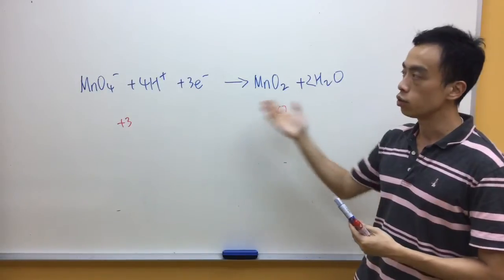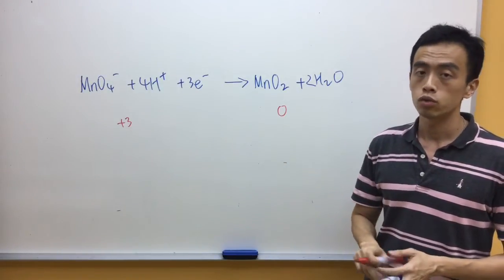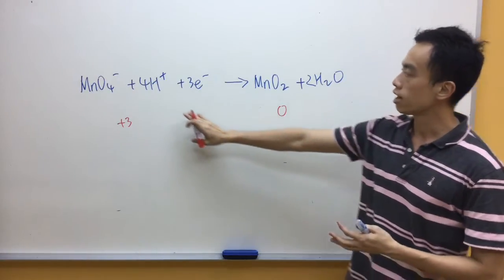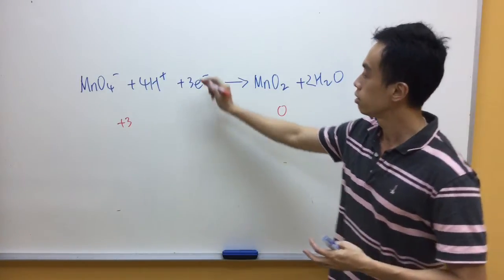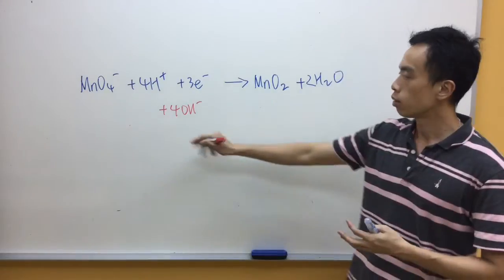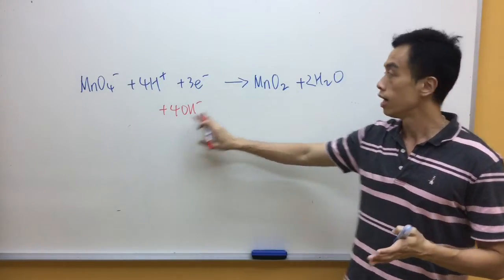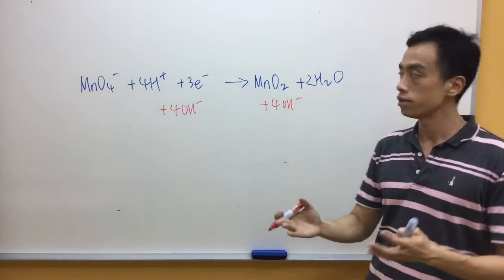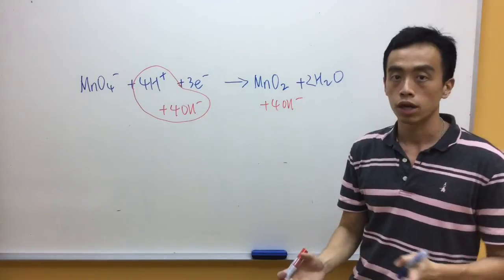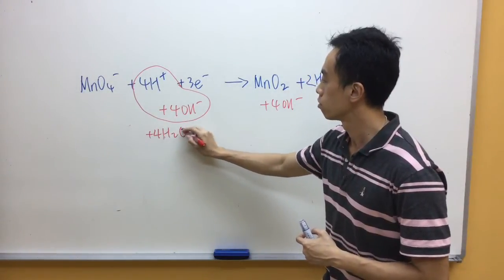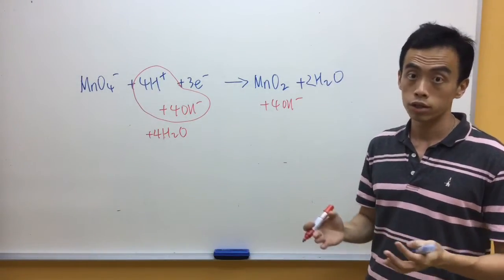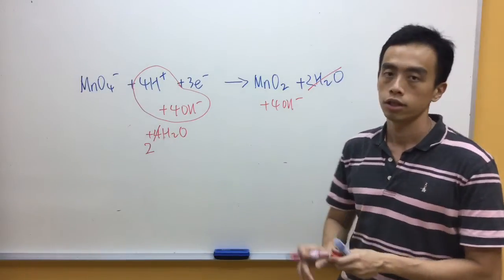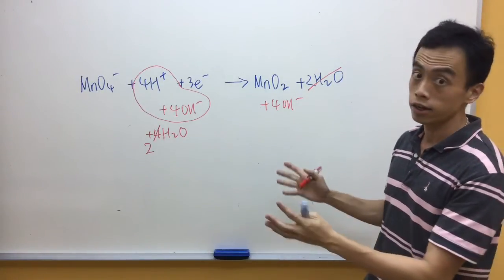We have balanced this equation in acidic medium. To convert it to alkaline medium, I simply add OH⁻ on both sides of the equation to neutralize the H⁺. In this case I have 4 H⁺, so I add 4 OH⁻ on the left-hand side and 4 OH⁻ on the right-hand side to keep the equation balanced. The 4 H⁺ and 4 OH⁻ neutralize each other to form 4 water. You can then cancel away the water — I have 2 water on the right-hand side to cancel, leaving a tidied-up balanced equation.